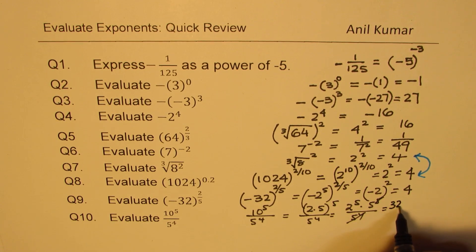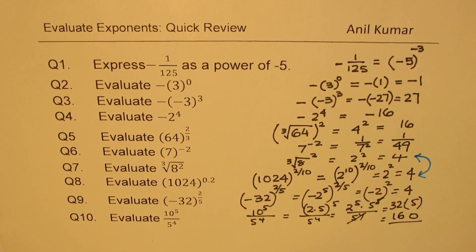So we have 32 times 5. So we could multiply this with 5 and get our answer. 5 times 2 is 10. 5 times 3 is 15 and 1 is 16. So 160 is your answer for question number 10.